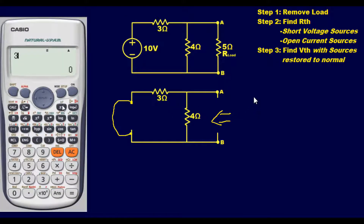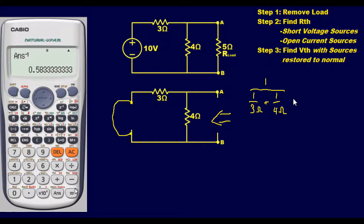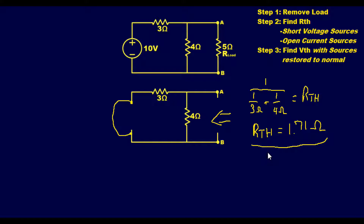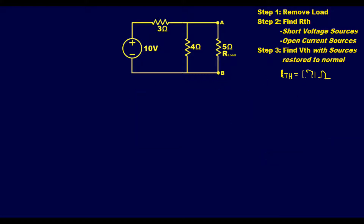Using the parallel resistance formula: one over three ohms plus one over four ohms — the reciprocal of the sum of reciprocals — gives our R_thevenin a final value of 1.71 ohms. Step two complete, we found our R_thevenin.